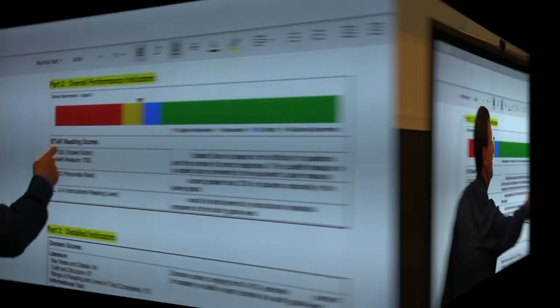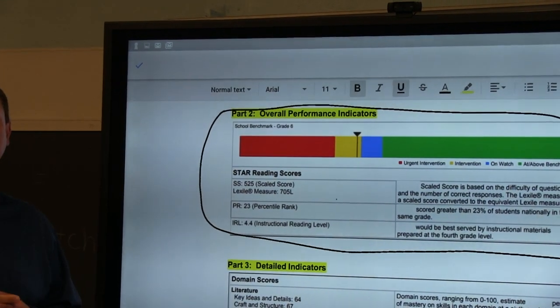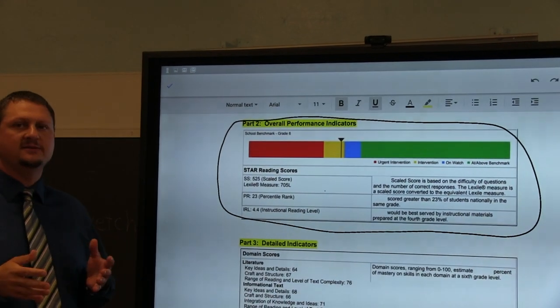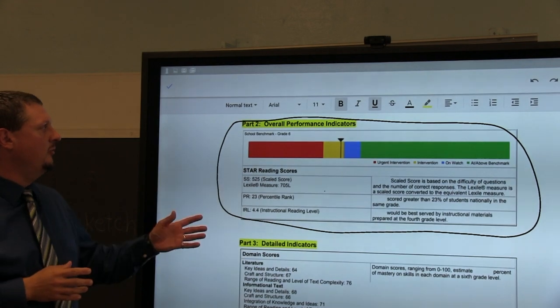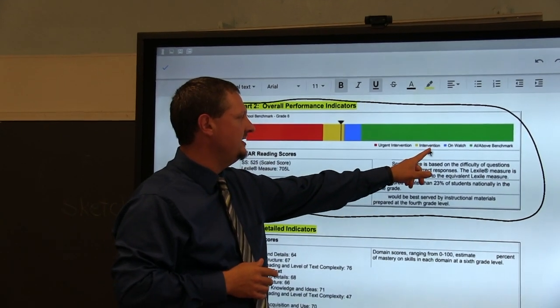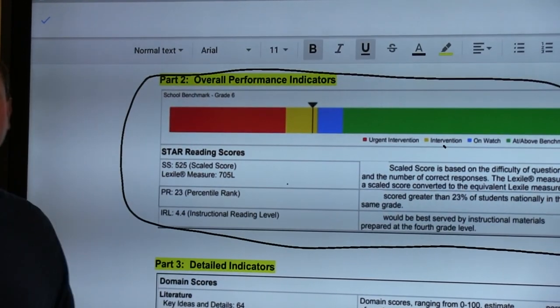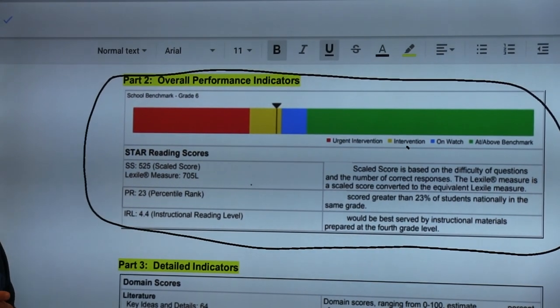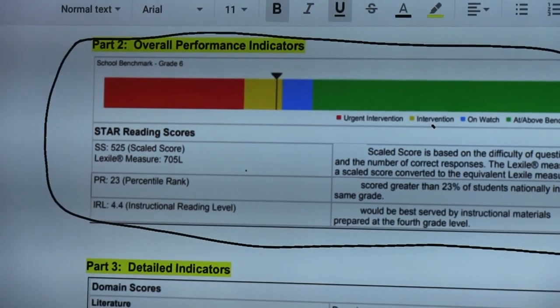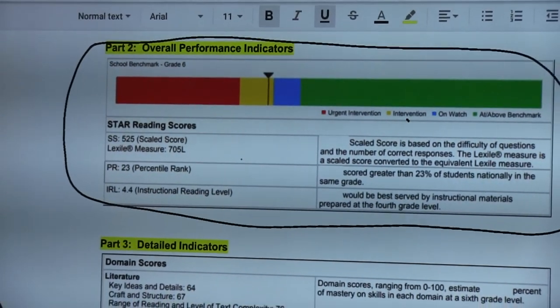The second portion of the STAR assessment is the part that I refer to as the overall performance indicators. In this particular section of the STAR assessment it places all students into one of four categories: an urgent intervention category, an intervention category, an on watch category, or an at or above benchmark category. Those categories are based on the percentile rank that the student earns when they take the assessment. It also takes and norm references it to all students that take the STAR assessment throughout the United States.